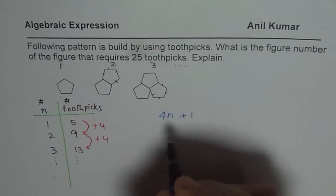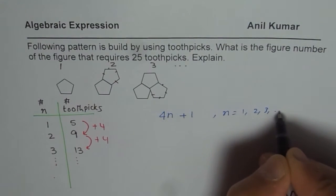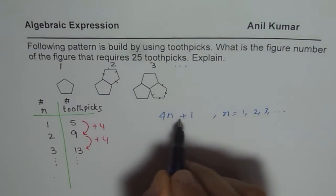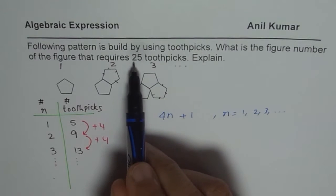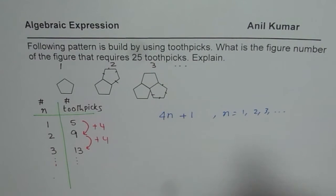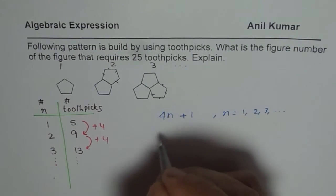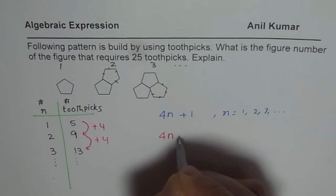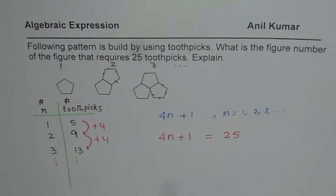It works. So N could be equals to 1, 2, 3, and so on. And this expression, 4N plus 1, represents the number of toothpicks. When we say we need 25 toothpicks, then what we need to do is solve for 4N plus 1 equals to 25. So when will 4N plus 1 be equal to 25? This is what I have to think.